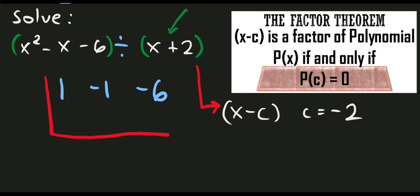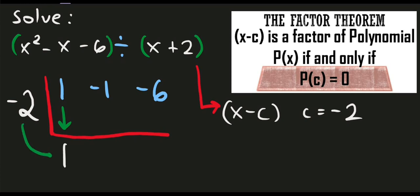Our technique here is to change the indicated sign. So if that is plus 2, we will use negative 2. Let's use negative 2 as our divisor. First, we need to bring down the first number. We have 1 and multiply it to our divisor, which is negative 2. So negative 2 times 1 is equals to negative 2. After that, just add the value. So we have negative 1 plus negative 2, that is equals to negative 3.